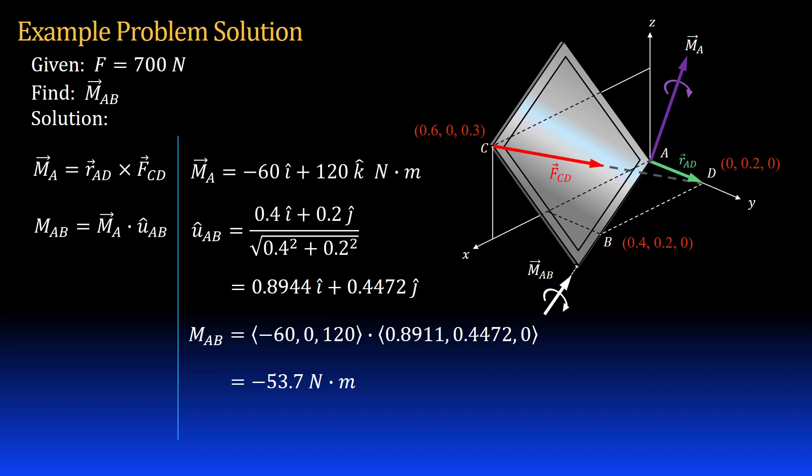The negative sign means that if I put my thumb in the direction of my unit vector A to B, the rotation direction is negative or opposite the direction of my fingers. Another way to look at this is that rotation is in the direction of my fingers if I point my right thumb from point B towards point A.